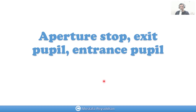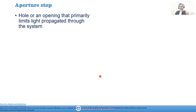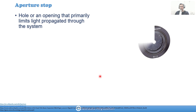We want to talk about aperture stop, exit pupil, and entrance pupil. The stop of the optical system is a hole or opening — anything that limits the light's propagation through your optical system. Usually in optical systems in the lab, we have a part called an iris diaphragm, which is a variable aperture stop. The diameter of this part is something you can change, and that is the stop of the system.